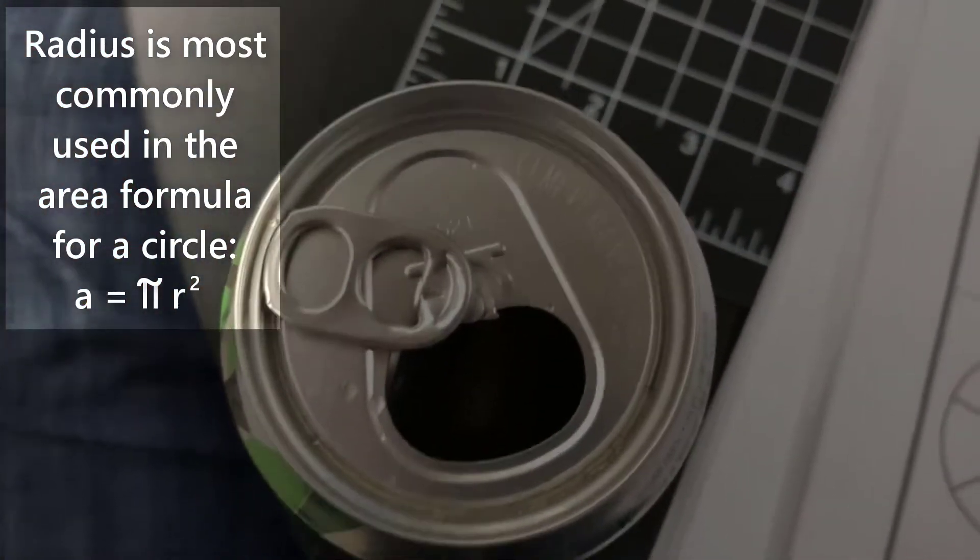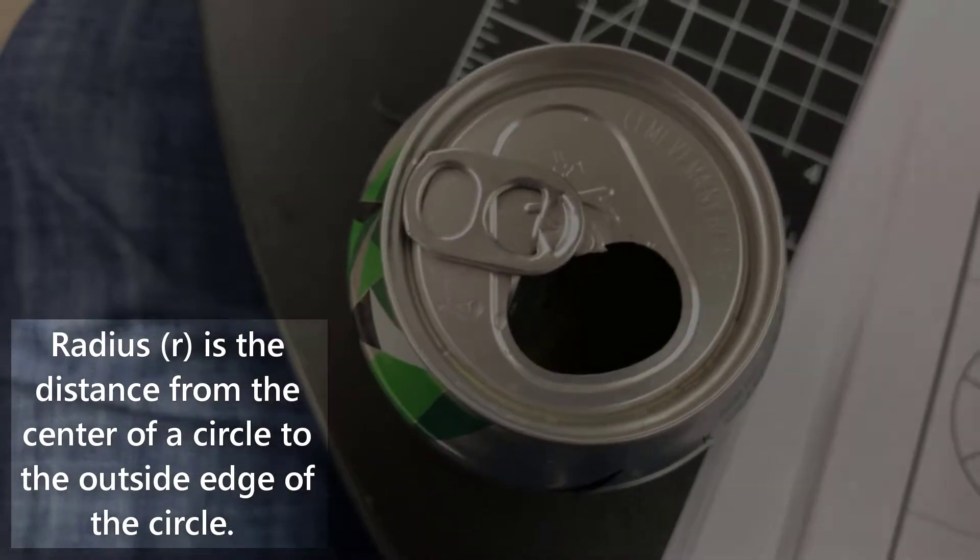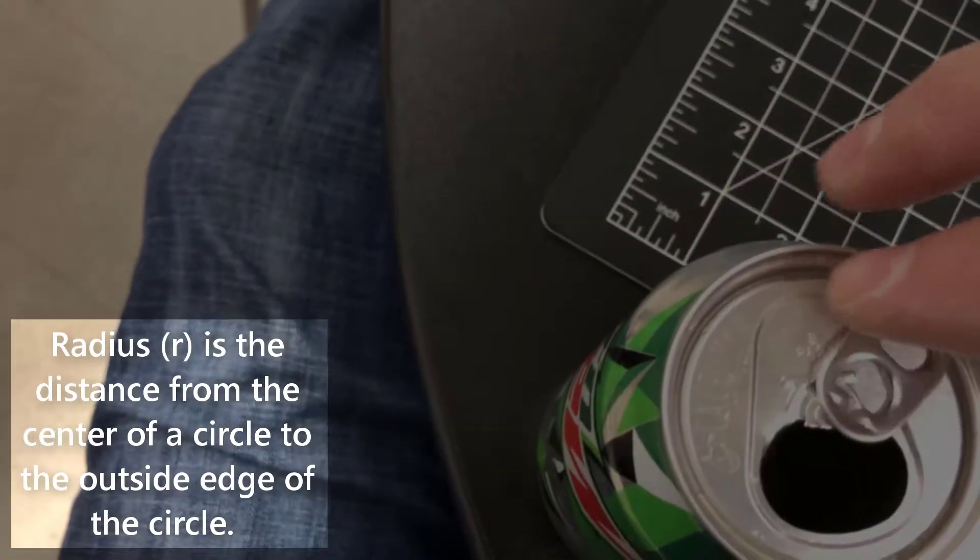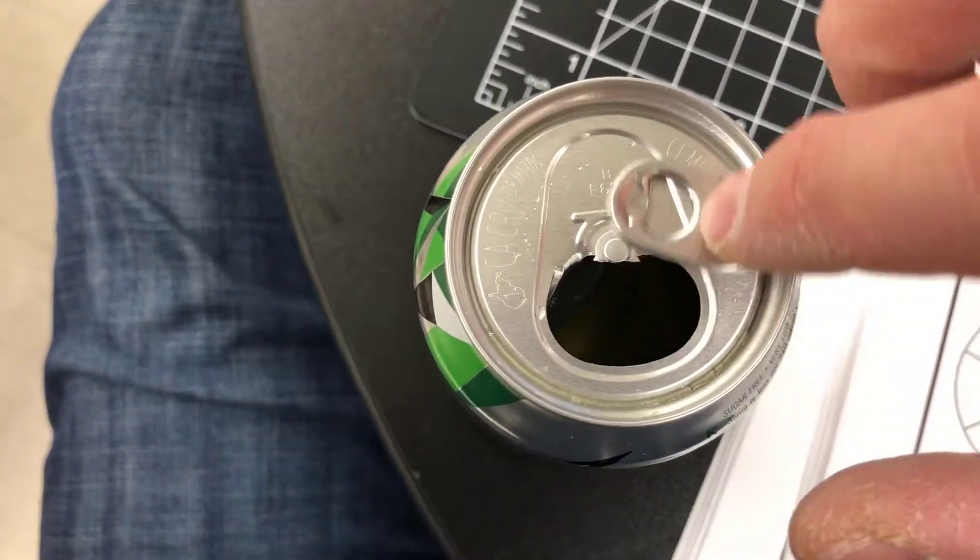How many of these tabs do we need in order to make a diameter? The answer is gonna be two. I spin that around to the other side, I would need two tabs in order to make the diameter.